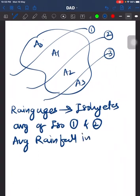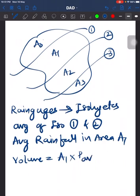This will give us the average rainfall in area A1. From that precipitation, we are going to calculate the volume of precipitation in the particular area, which we can get as A1 times the average precipitation which we have taken from the isohyets.